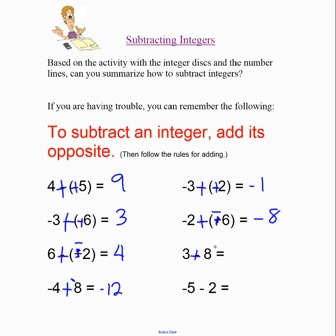Add the opposite of 8, which will be negative 8. 3 plus negative 8 is negative 5. And add the opposite of 2, which is negative 2. Negative 5 plus negative 2 is negative 7.